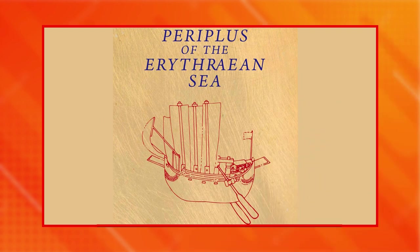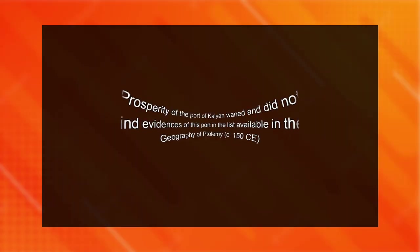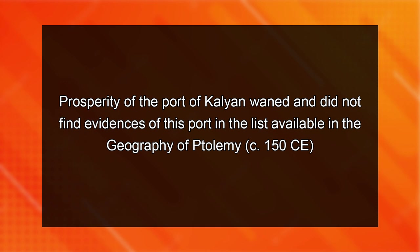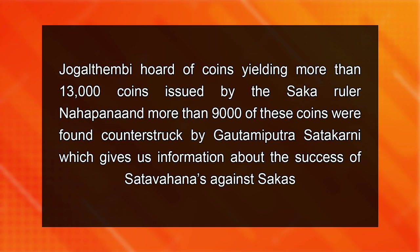The struggle between the Sakas and Satavahanas was fought in three phases. The first phase is described by the author of the Periplus of the Erythraean Sea. He says that when King Berigaza, Nahapana, put a naval blockade around the port of Kalyan, cargoes were forced to go to Barygaza. The prosperity of the port of Kalyan waned, as evidenced by its absence from the list in the geography of Ptolemy, dated 150 CE. During the time of Gautamiputra Satakarni, the second phase of the conflict started. We get evidence from the Nasik Prasasti and coins of these two dynasties. The Jogalthambi hoard of coins yielded more than 13,000 coins issued by the Saka ruler Nahapana, of which more than 9,000 were found counter-struck by Gautamiputra Satakarni, giving us information about the success of Satavahanas against the Sakas.